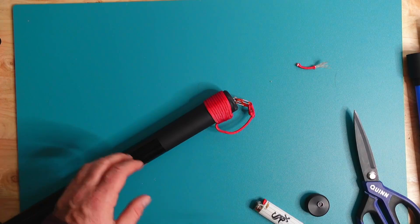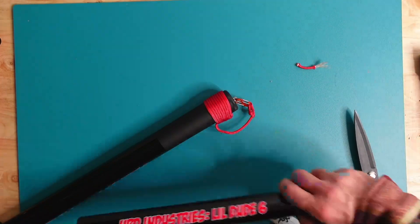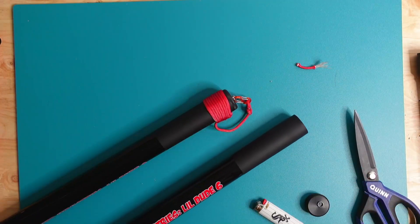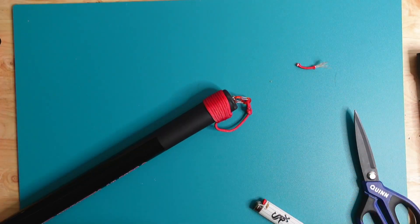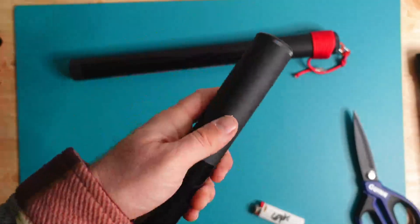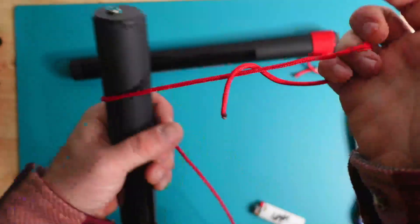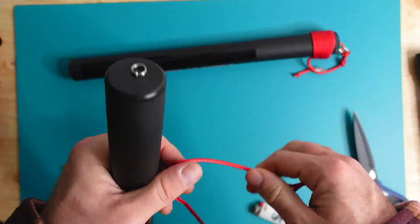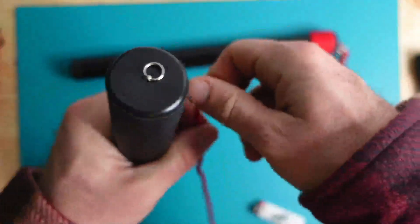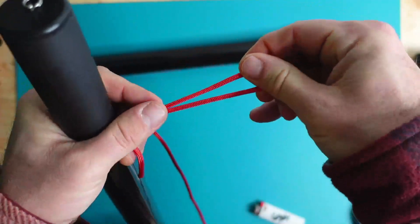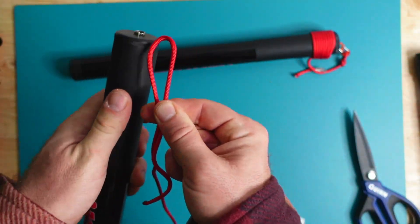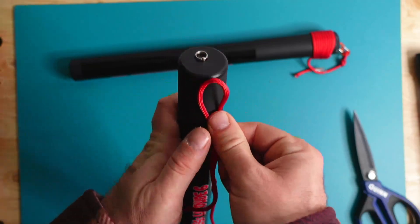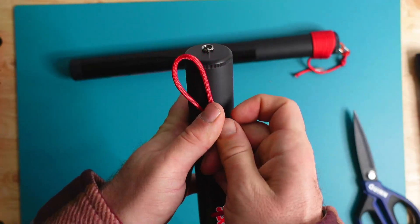We're just going to go ahead and take those ends and put a little bit of heat to them, and we could actually see the 550 cord or the nylon melding together. Now, we've got to find our mast. I just happened to have another little dude right here, and this was the cap for it.